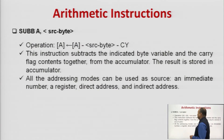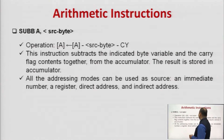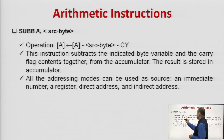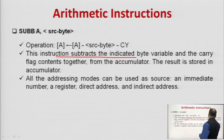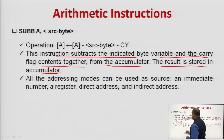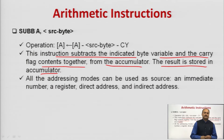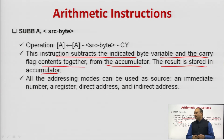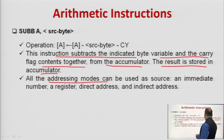Next is the subtraction operation. The instruction is SUBB A, source byte. This instruction subtracts the source byte and the carry flag from the content of the accumulator, and the result is stored back into the accumulator. The carry flag acts as a borrow flag. All addressing modes can be used as a source: immediate number, register, direct address, and indirect address.